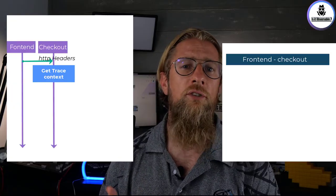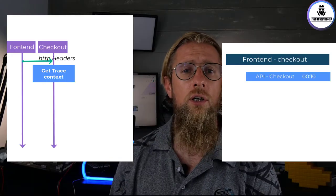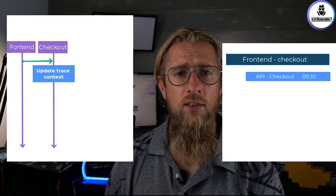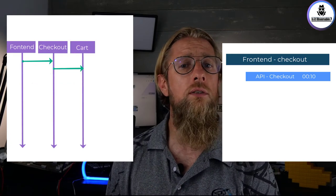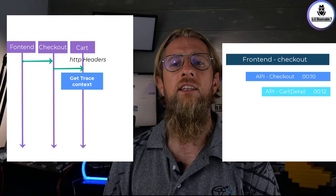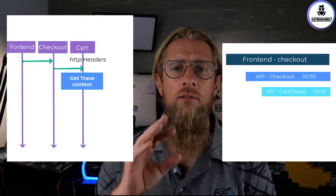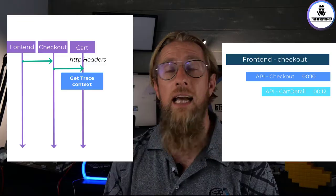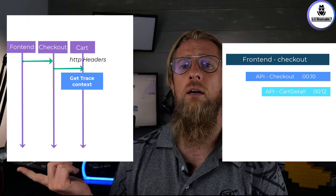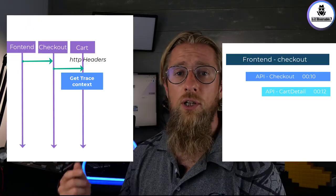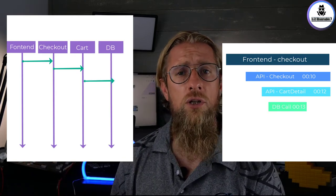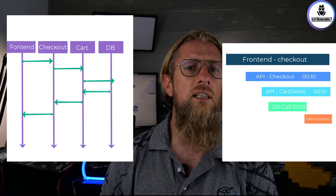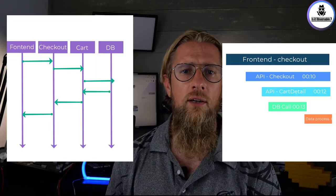The checkout service can either utilize an existing trace context or create a new one with a new span. A new span will have a name and a timestamp — for example, the 'checkout API call' at a given timestamp — and it will be added to the trace context in the HTTP request sent to the cart service. The cart service receives the request, collects the trace context, and also adds its own span. You can create as many sub- or child spans as needed to attach sub-tasks, and you can track interactions with the database as well.